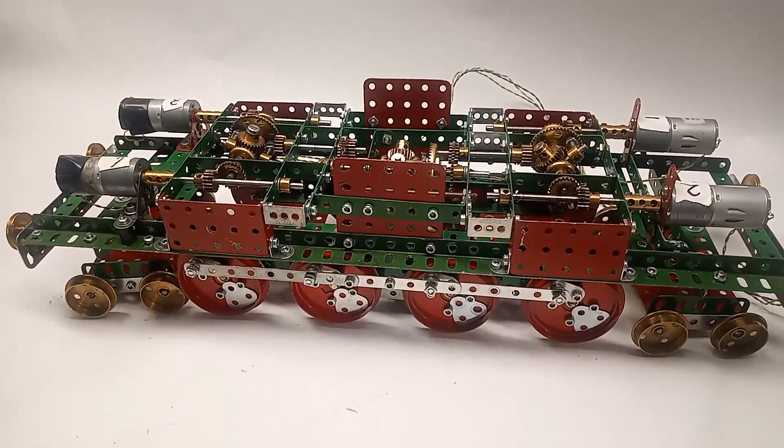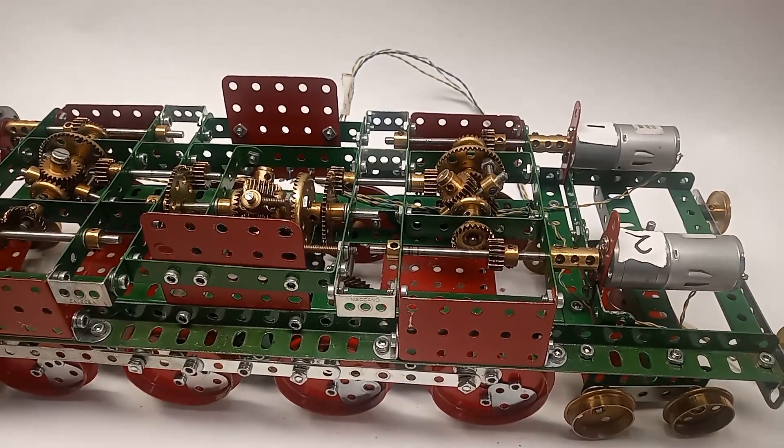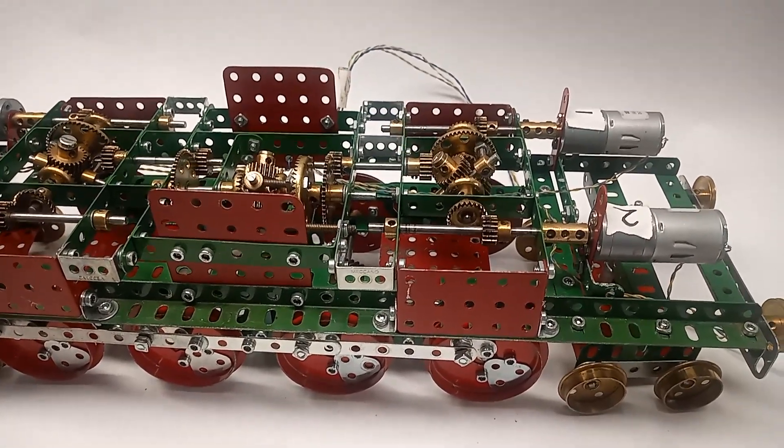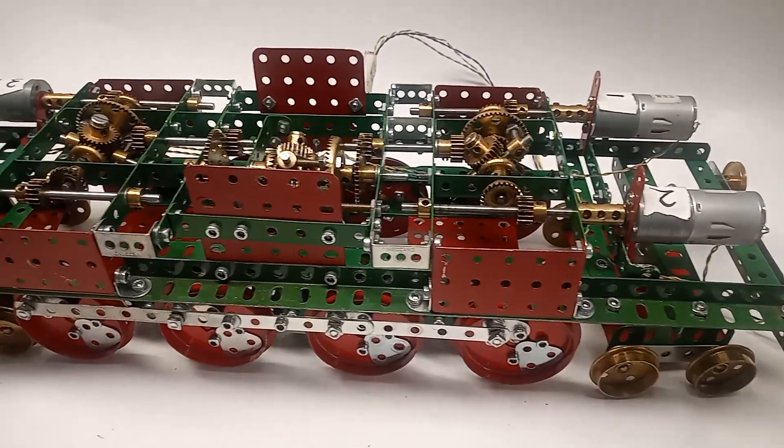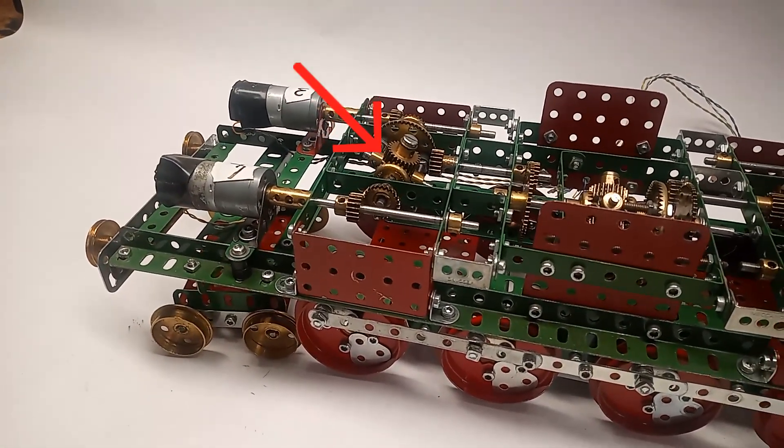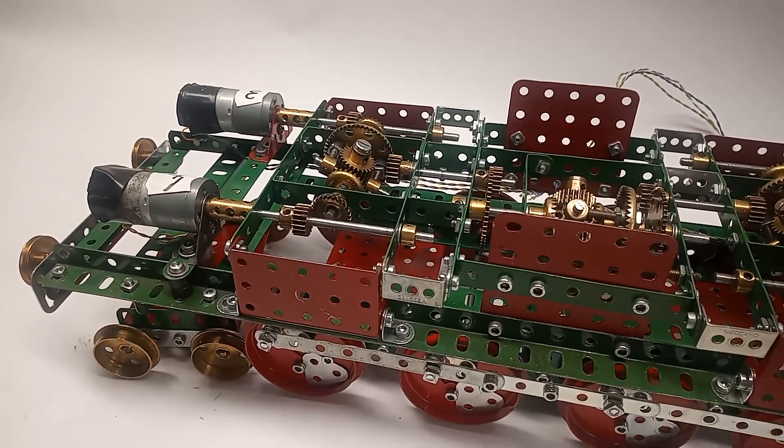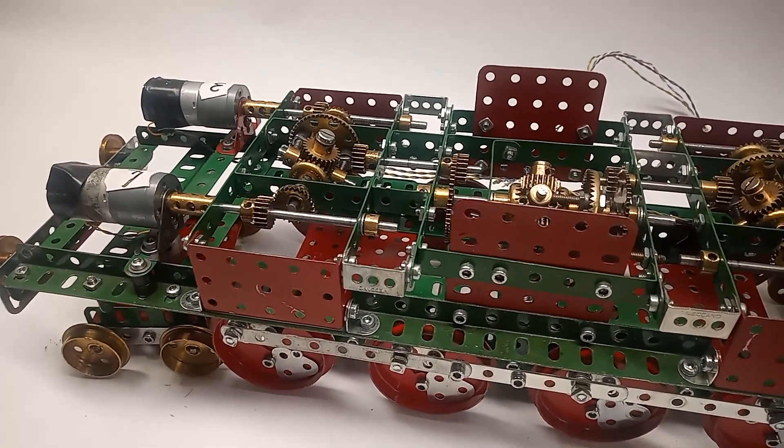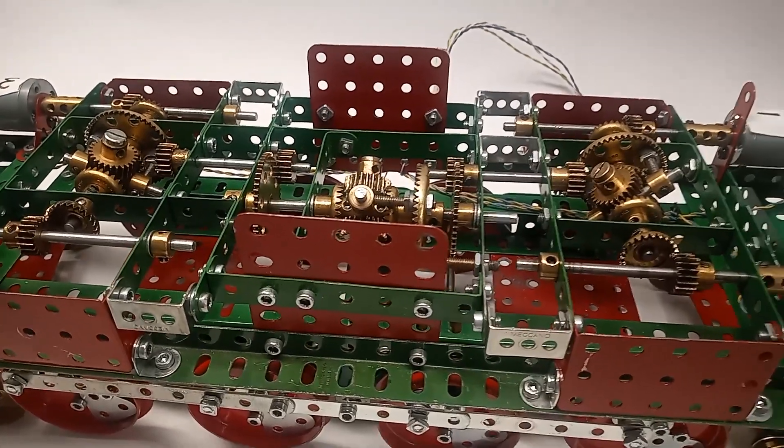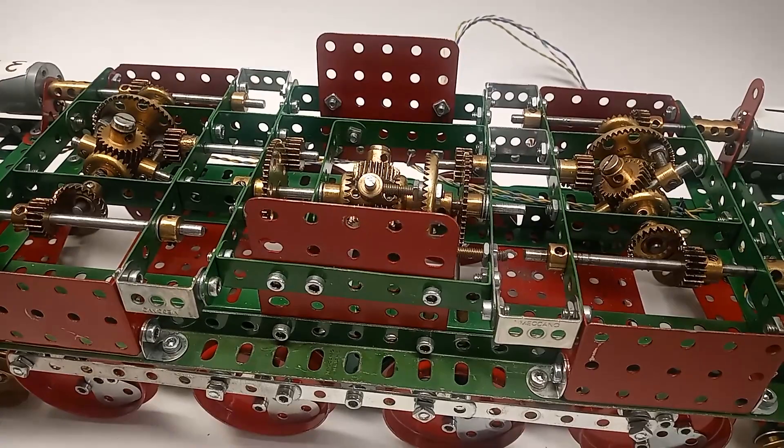The output of the two motors one and two are combined by a differential gear. The output of motors three and four are combined in another differential gear. The outputs of these two differentials are combined in a third final differential and the output of this drives the driving wheels.